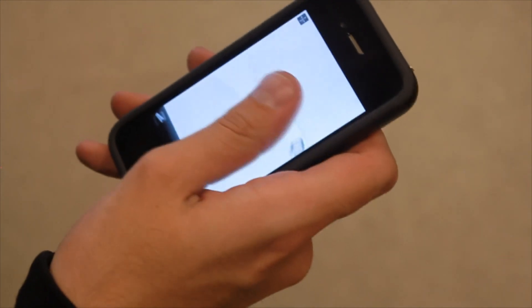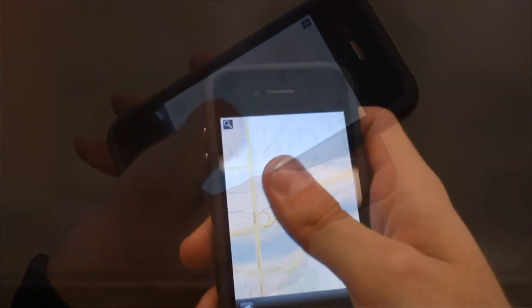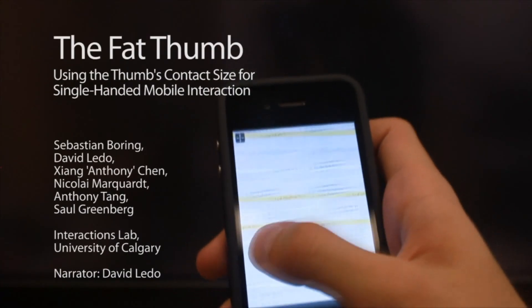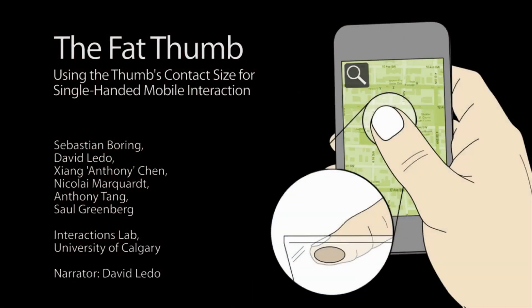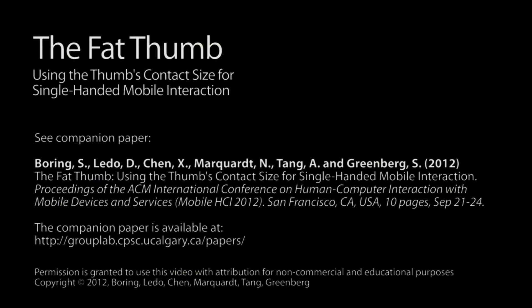In summary, we introduced the fat thumb interaction technique allowing one-handed interaction with a mobile device. It causes little to no strain on the thumb and wrist, and it provides a simple mode switch that people can easily understand and get used to. Overall, we believe that making use of the contact size provides a new dimension for mobile interaction.